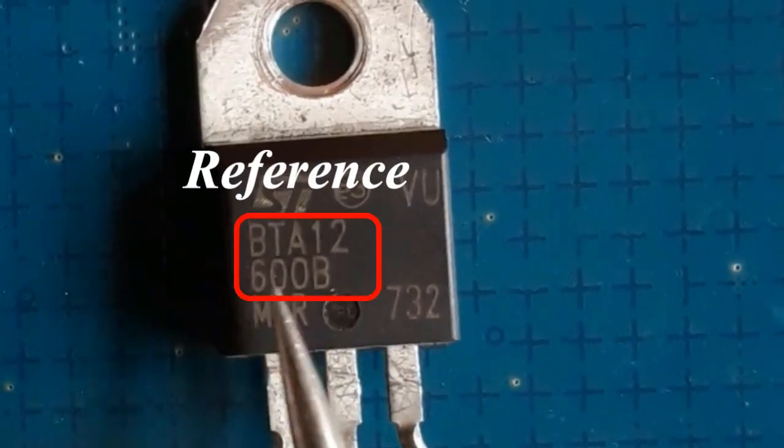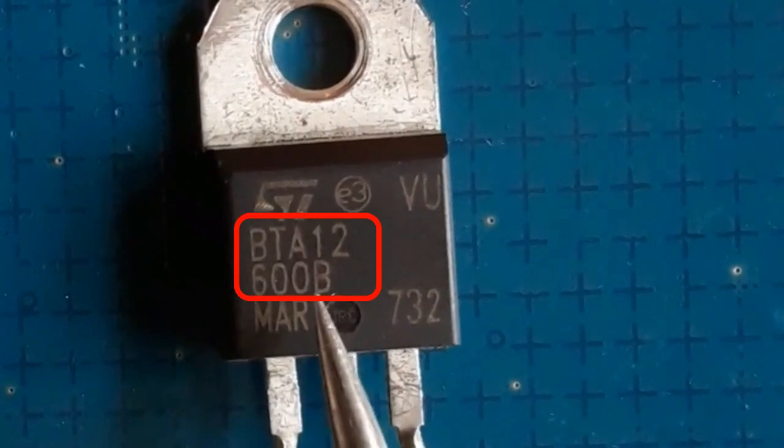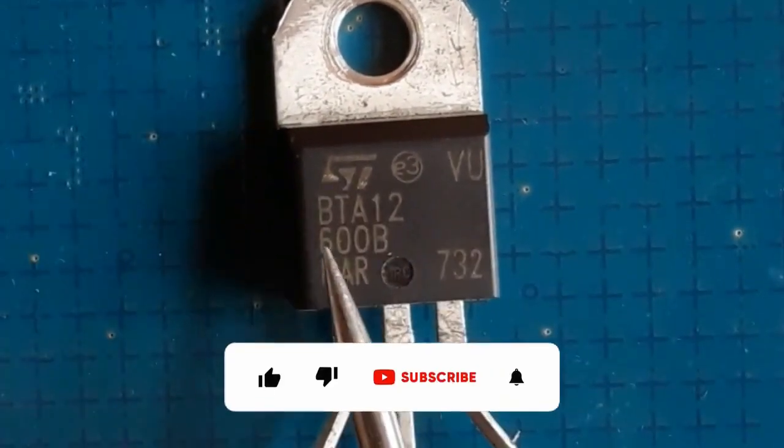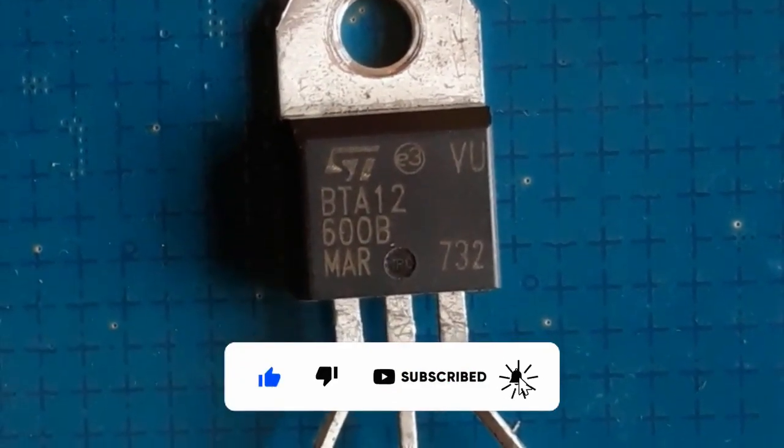So, here we have the reference or the part number for the TRIAC. We have BTA12600B. If you have a bad TRIAC with this reference, you should replace it with the same reference, of course.